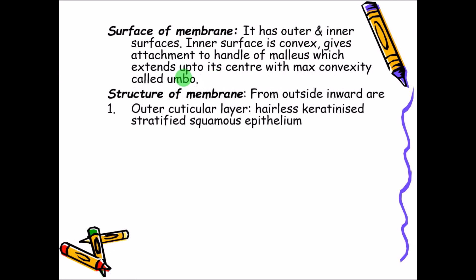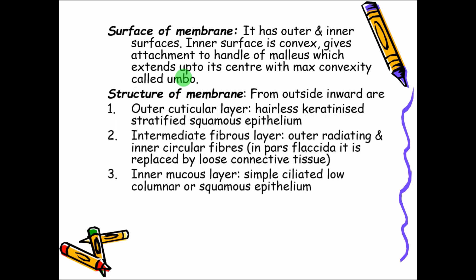The structure of the membrane is trilaminar, with three layers: the outer cuticular layer, the intermediate fibrous layer, and the innermost mucosal layer. The outer cuticular layer is skin covering the tympanic membrane — it is hairless but is keratinized stratified squamous epithelium. The intermediate fibrous layer has outer radiating as well as inner circular fibers.